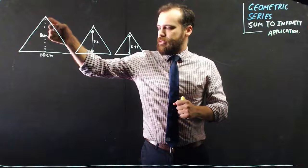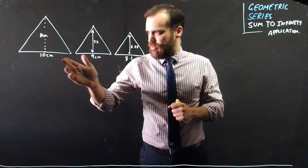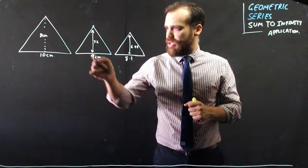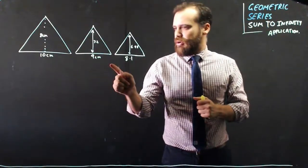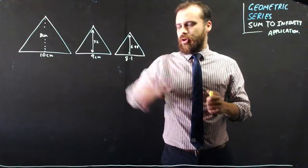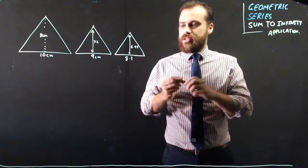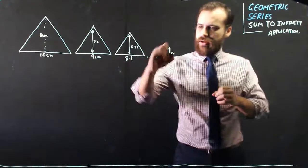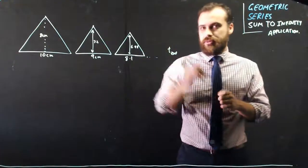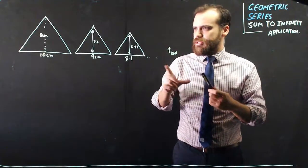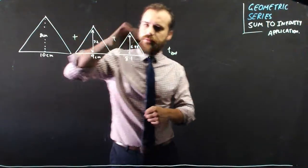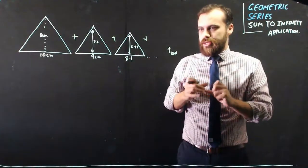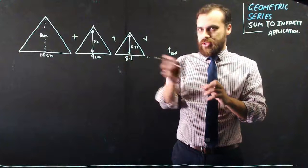A triangle, 10 by 8 — base of 10, height of 8. Another triangle, base of 9, height of 7.2. Another triangle, base of 8.1, height of 6.48, and so on, forever to infinity. Now the question is, if I added all the areas together, what would the total area be? Given that these triangles continue to get smaller and smaller.